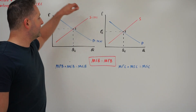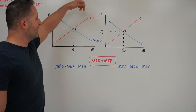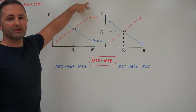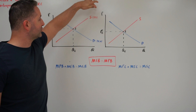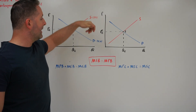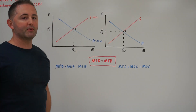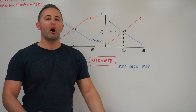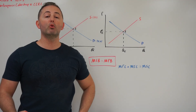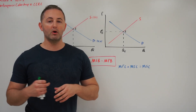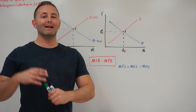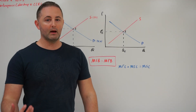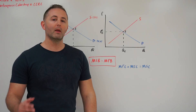The idea here is that when the supply curve is representing the marginal social cost and the demand curve is representing the marginal social benefit, our market is not only in equilibrium, but it is also producing the optimal quantity of a good.